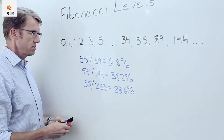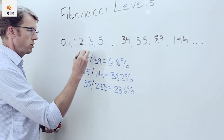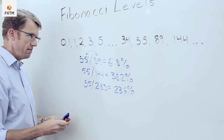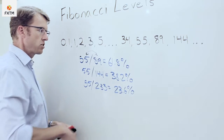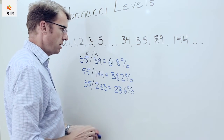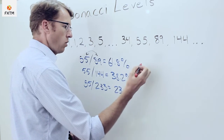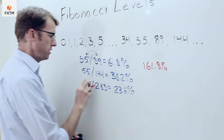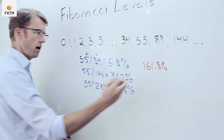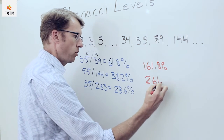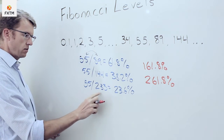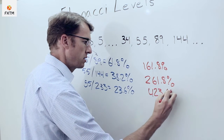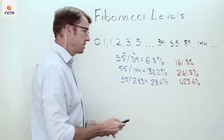If we invert those division problems — taking 89 divided by 55, and 144 divided by 55 — we get slightly different numbers. So inverting gives us 161.8%, then if we take 144 divided by 55 we get 261.8%, and 233 divided by 55 gives us 423.6%.